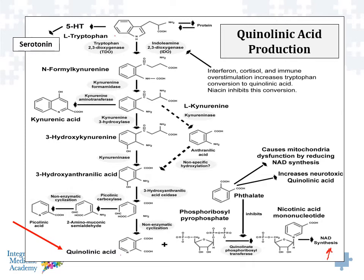Up top we have tryptophan. Tryptophan can become serotonin, but it sits at a biochemical crossroads. Tryptophan can be pulled into the quinolinic acid pathway by various stressors — for example, interferon from a viral infection, cortisol from stress, or other immune-stimulatory activity from chronic infection — which can increase the activity of an enzyme called indolamine-2,3-dioxygenase (IDO). Increases in IDO cause tryptophan to get pulled into the quinolinic acid pathway. If our body is stressed and needs to upregulate cell metabolism, it can do so in part through the production of NAD.